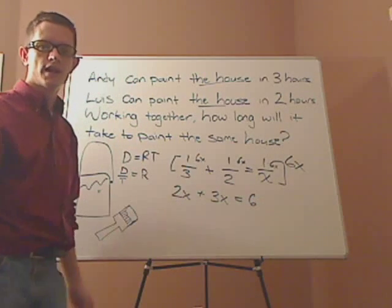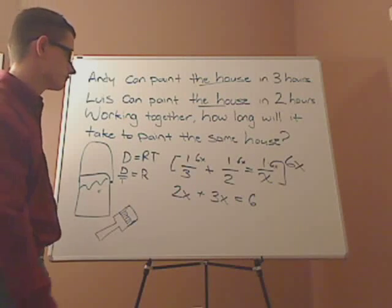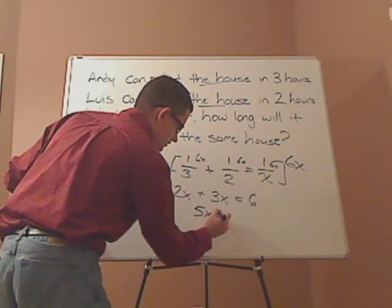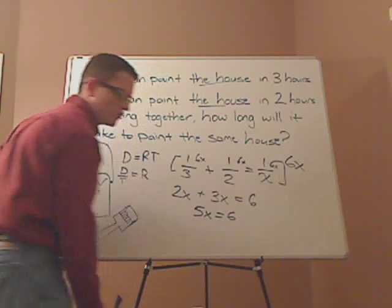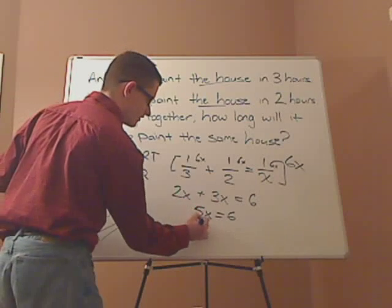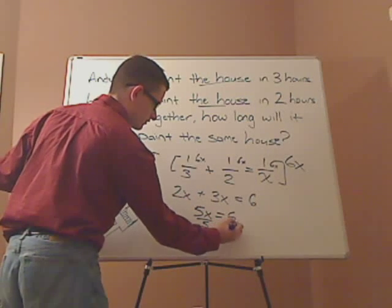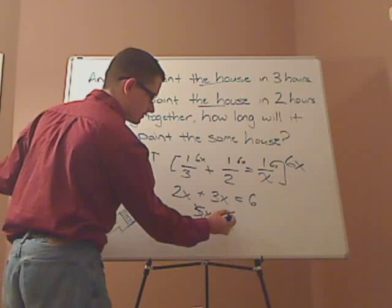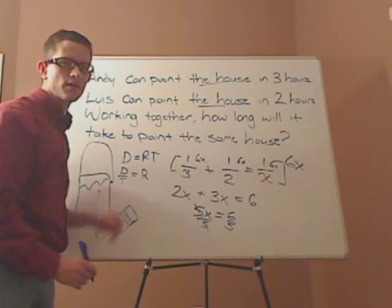2X plus 3X is what? Yeah, 5X. So, it's 5X equals 6. What am I going to do next? Yeah, you just simply divide both sides by 5. So, the 5's cancel out. You're left with X equals 6 over 5.